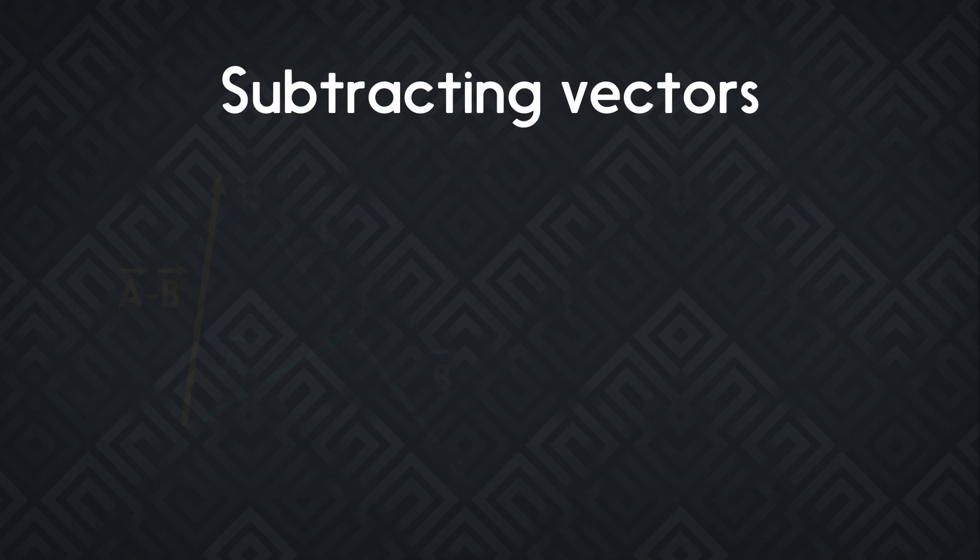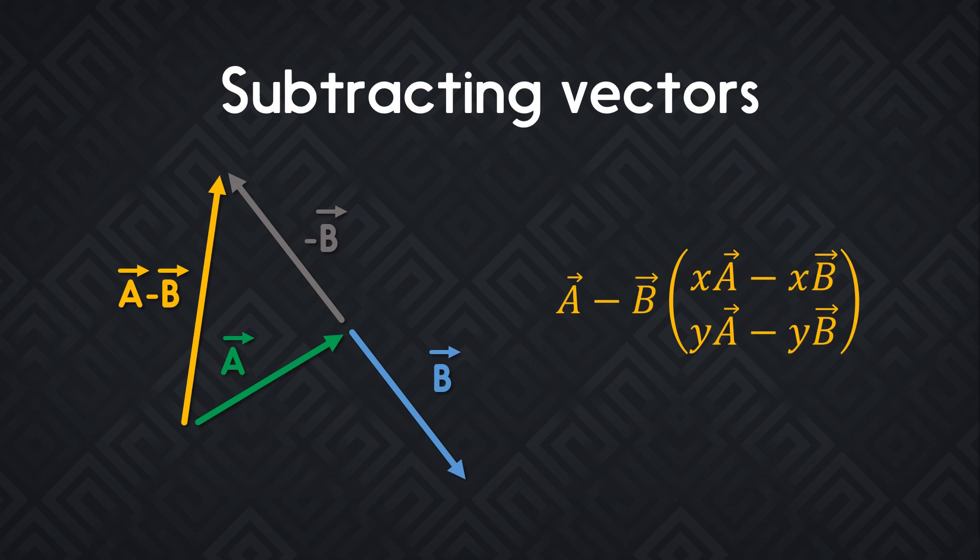Instead of adding vectors together, we can subtract them. Subtracting a vector to another is like adding its opposite. For example, see the B vector that's pointing down. Minus B, the opposite, when you subtract it, goes in the other direction.